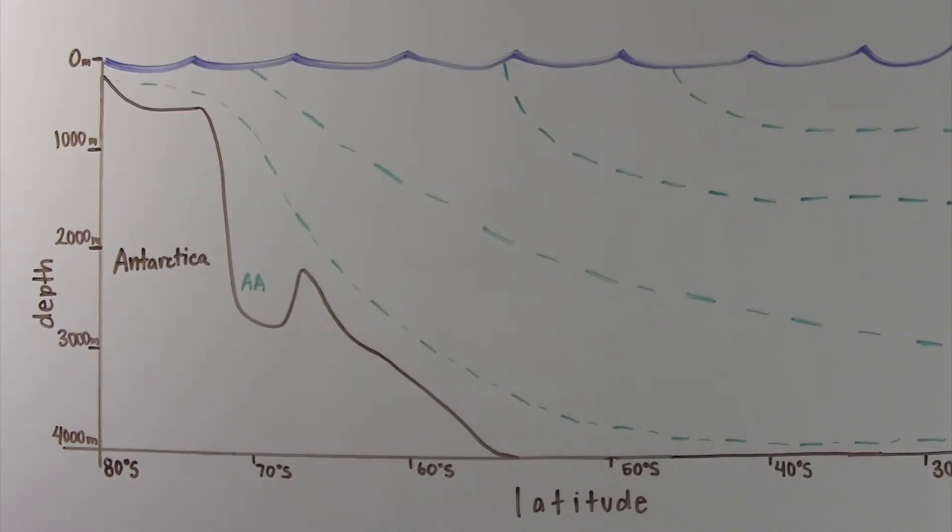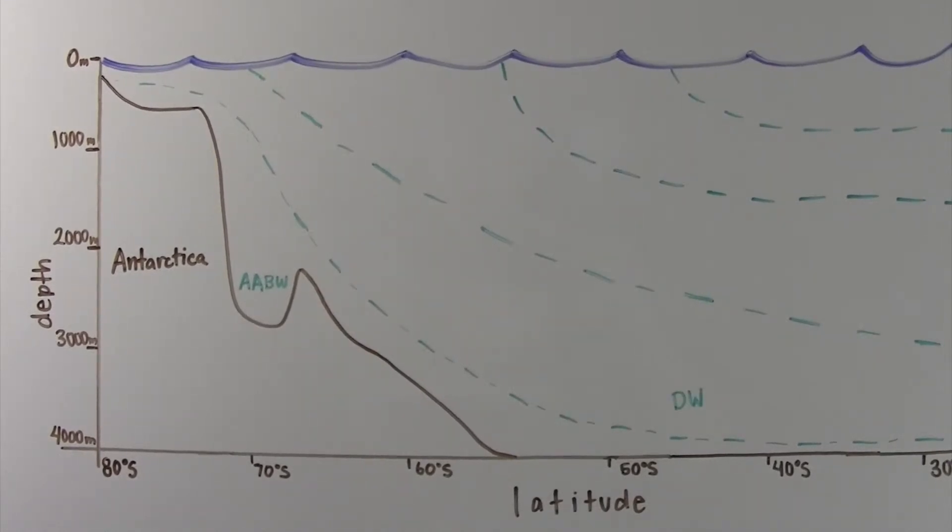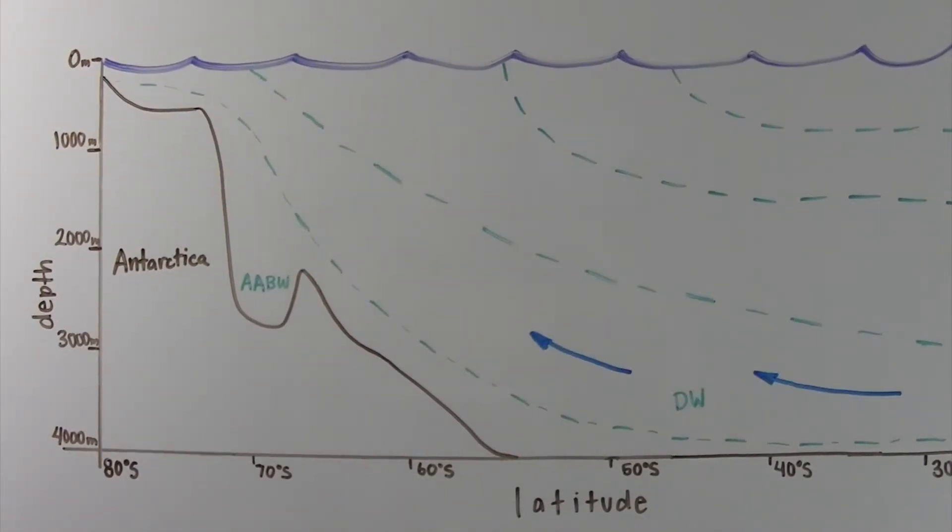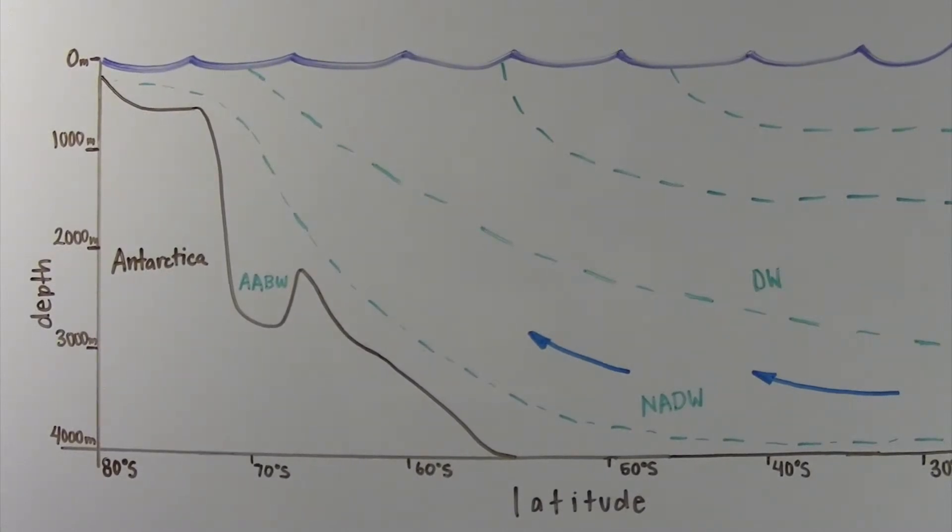The densest bottom water is called Antarctic bottom water. The deep water above this that travels from the northern Atlantic is called North Atlantic deep water. There's more deep water above this called upper circumpolar deep water.